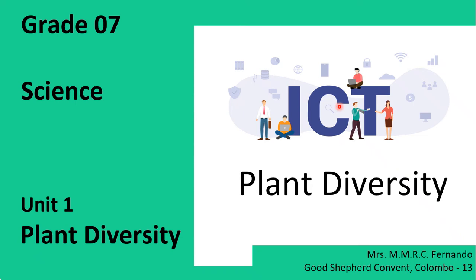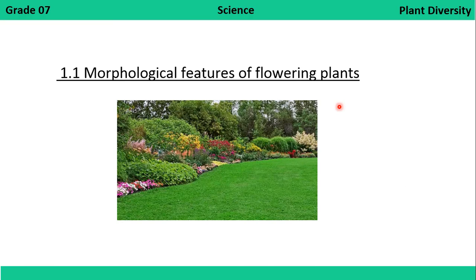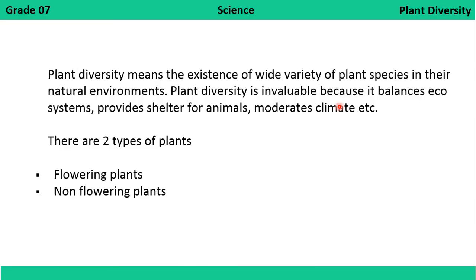This first unit is about plant diversity and we will see the morphological features of flowering plants. In our environment we see a wide variety of plants and they all don't look the same. They differ from each other in many aspects. This plant diversity is invaluable because it balances ecosystems, provides shelter for animals, moderates climates, etc. There are many types of plants differing in size, the environment where they grow, and whether they produce flowers or not.